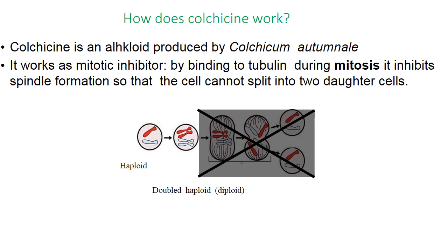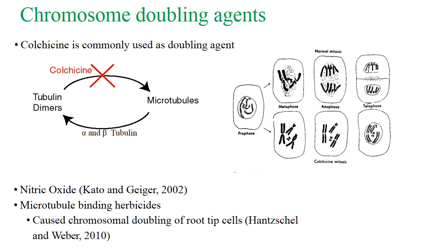We cannot call it diploid but it is a doubled haploid. The other chromosomal doubling agents are nitrous oxide and microtubule-binding herbicides like 2,4-D, which lead to chromosomal doubling of root-tip cells.